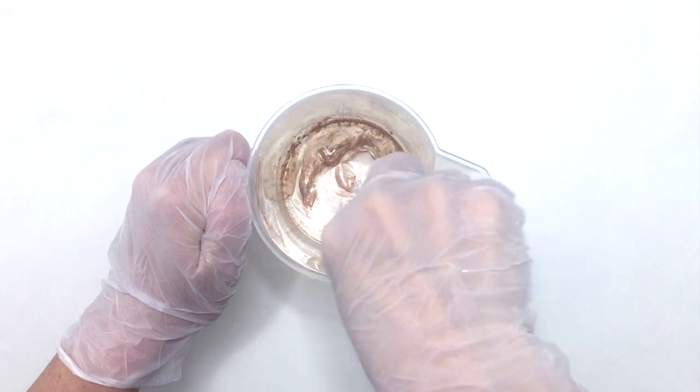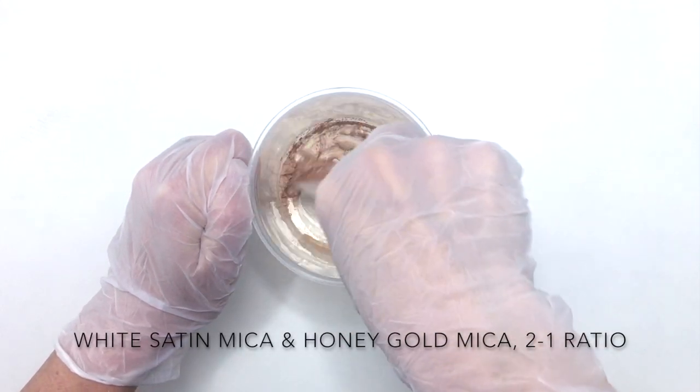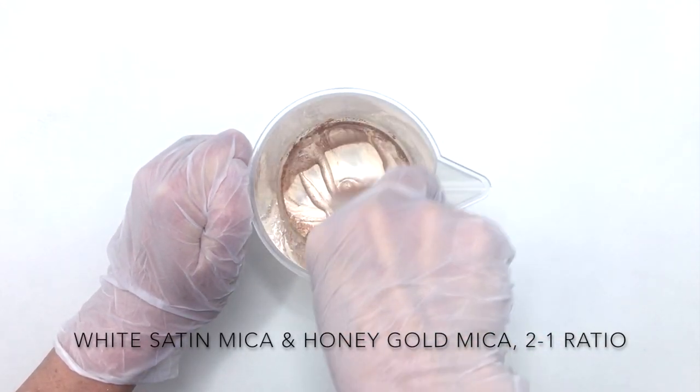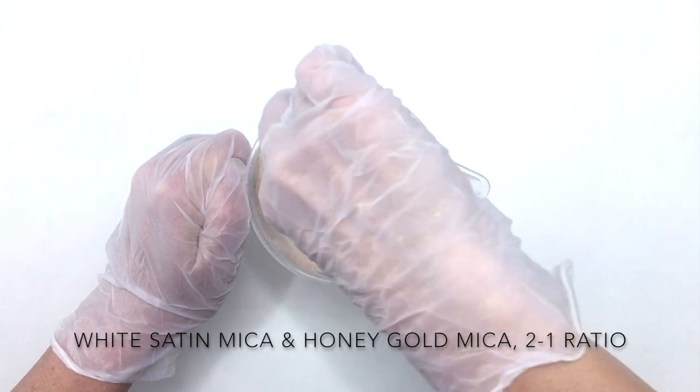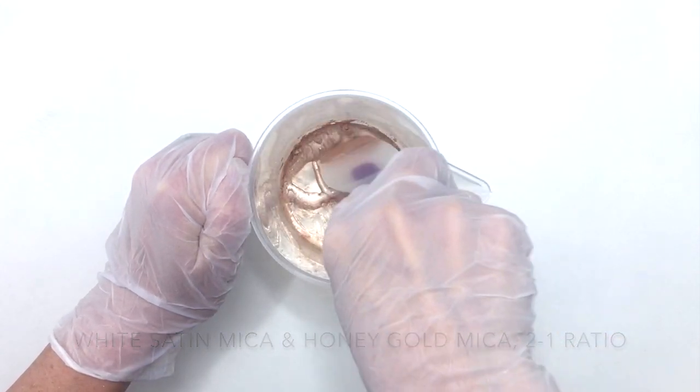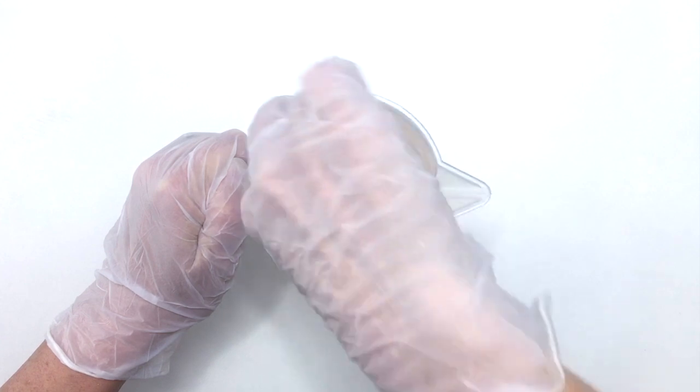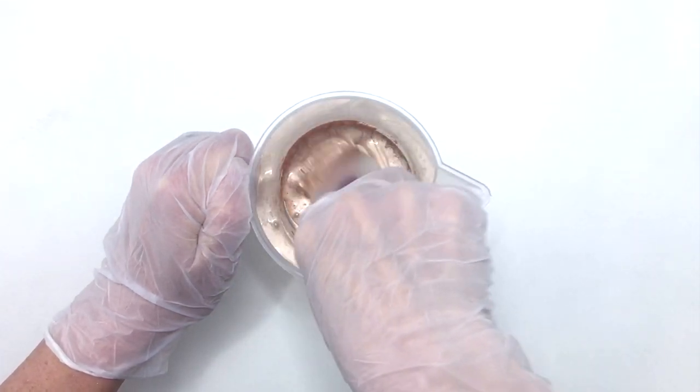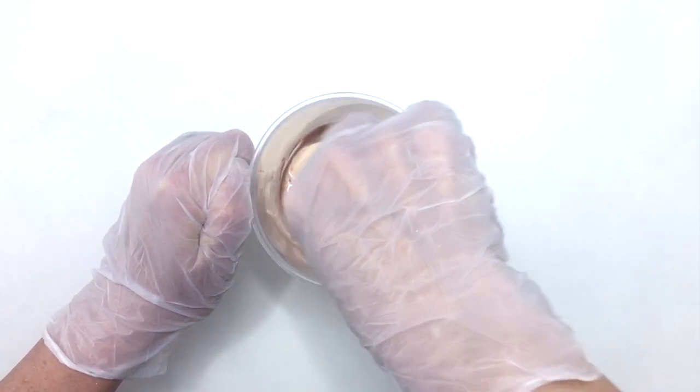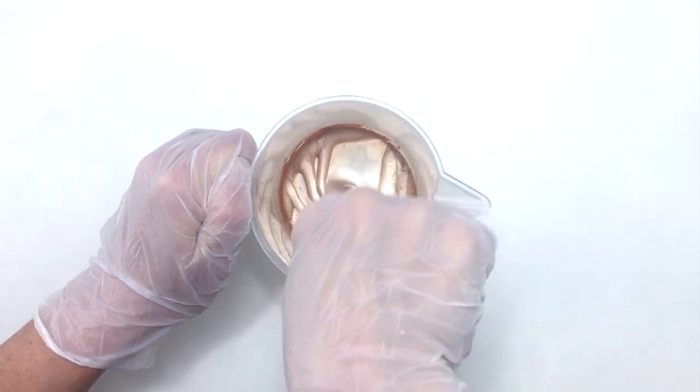I'm using white satin mica and honey gold mica in a 2 to 1 ratio to make a color to look like sand. Adding white to your pure color is called a tint, which I learned from my friend Clyde Yoshida over at Vibrant Soap. I can honestly say I've learned a lot about color theory from his videos.